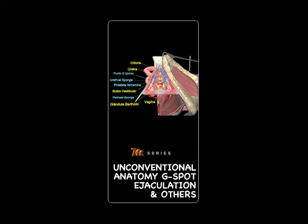Are the Skene glands the equivalent of the male prostate? Does the G-spot exist? Is the function of the Bartholin glands to lubricate during sexual intercourse? This chapter helps understand these questions by displaying visualizations of the functionality of these unconventional anatomical landmarks and their relevance for female pleasure.